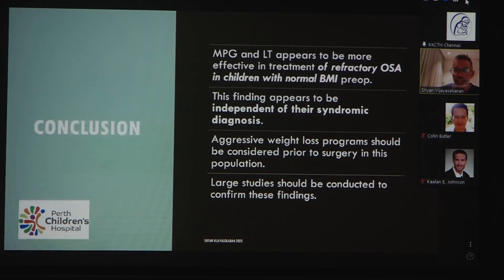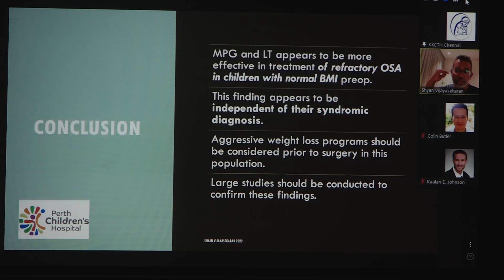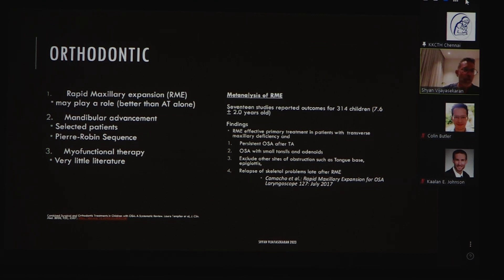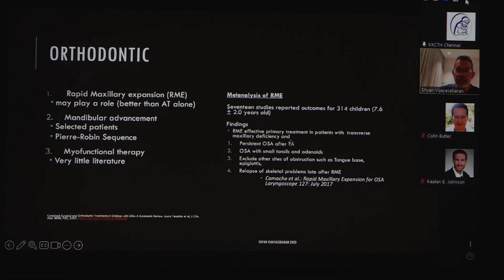In summary, in patients where macroglossia or glossoptosis is a problem, midline posterior glossectomy and lingual tonsillectomy are good operations in the absence of obesity to treat OSA. Surgical intervention is an alternative to positive airway pressure in these children and is a safe procedure. Rapid maxillary expansion has been shown to be better than adenotonsillectomy alone. In the majority of children with persistent OSA following adenotonsillectomy, or OSA with small tonsils and adenoids, once other sites of obstruction such as the tongue base or epiglottis are excluded, rapid maxillary expansion is an effective management option.